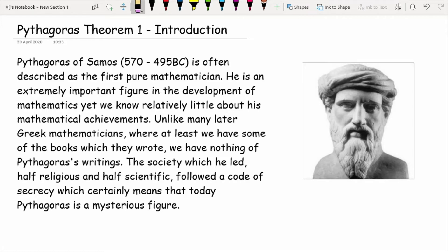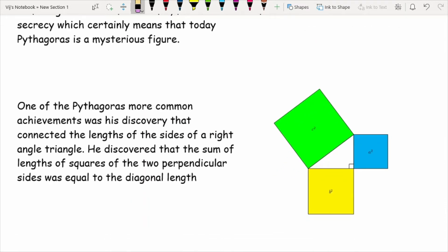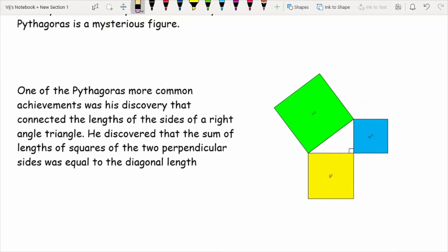Now moving on to what Pythagoras' most famous theories are. So one of Pythagoras' most common achievements was the discovery that connected the lengths of the sides of right-angled triangles. And he discovered that the sum of the lengths of squares of the perpendicular sides was equal to the diagonal length.